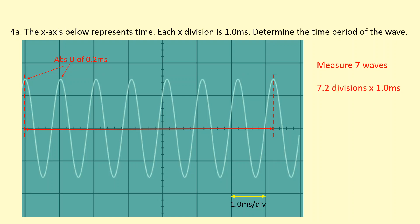And the reading there is around 7.2. Here's around 7.2, and each division is worth one millisecond, so overall time is 7.2 milliseconds divided by seven waves.